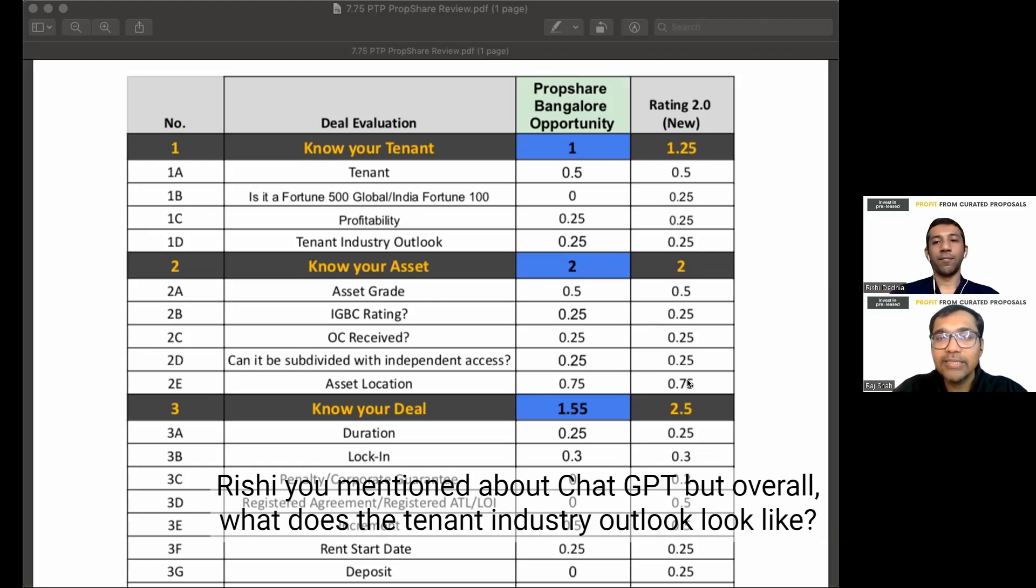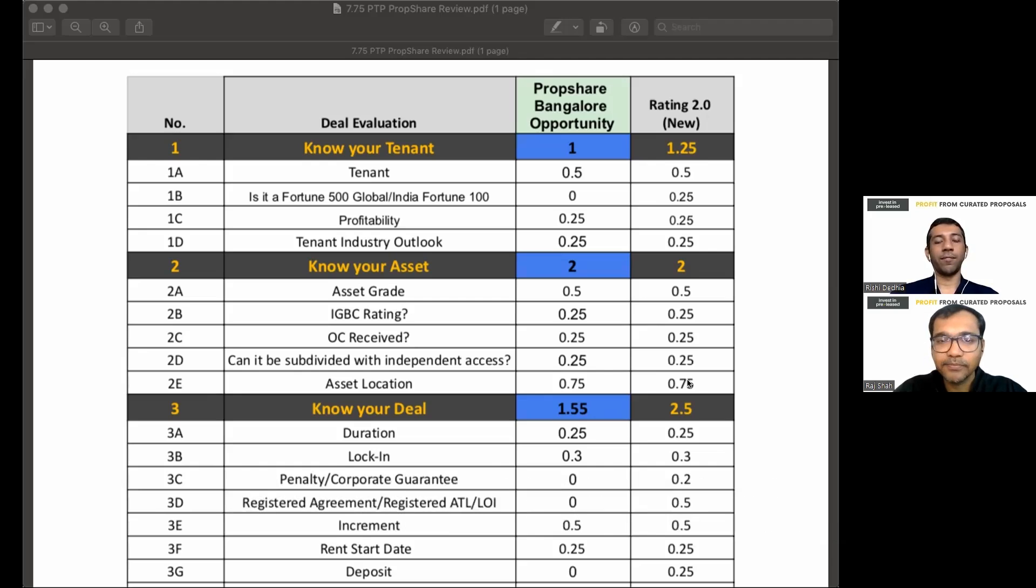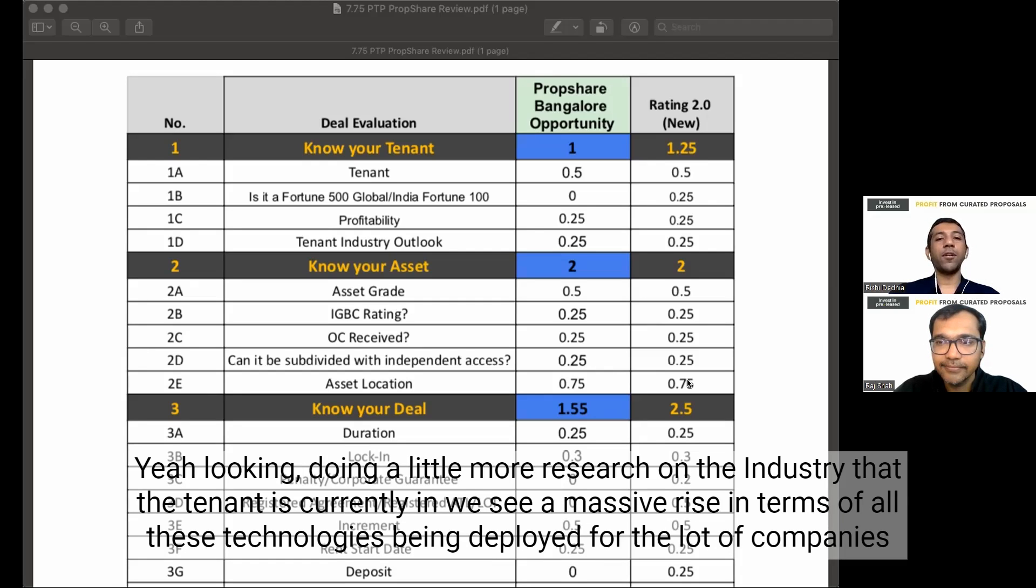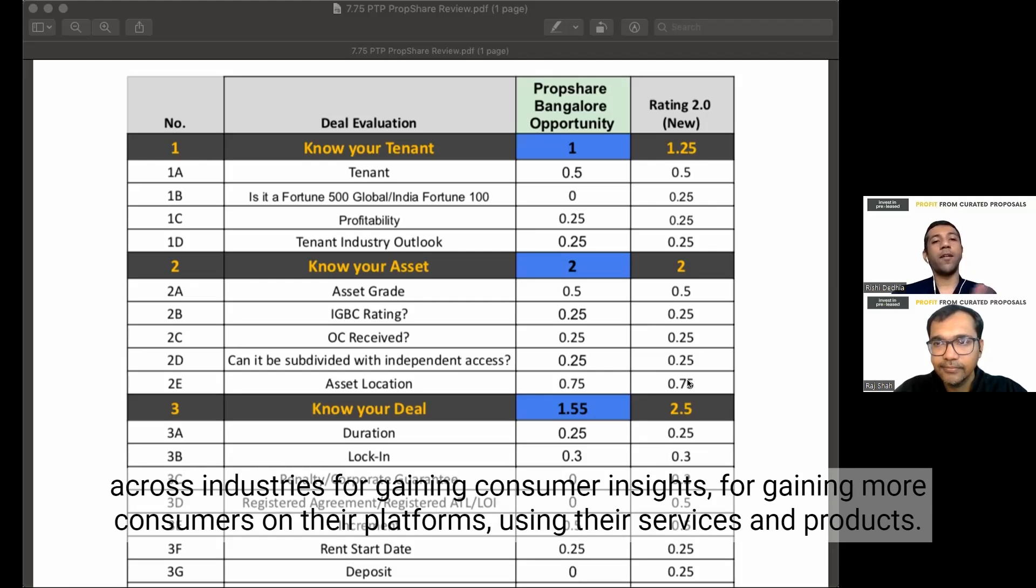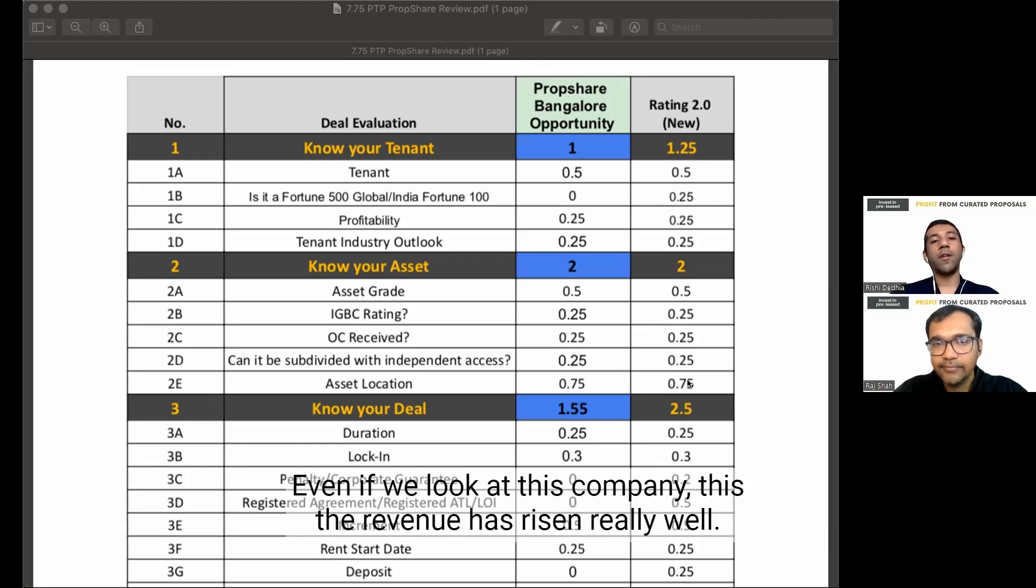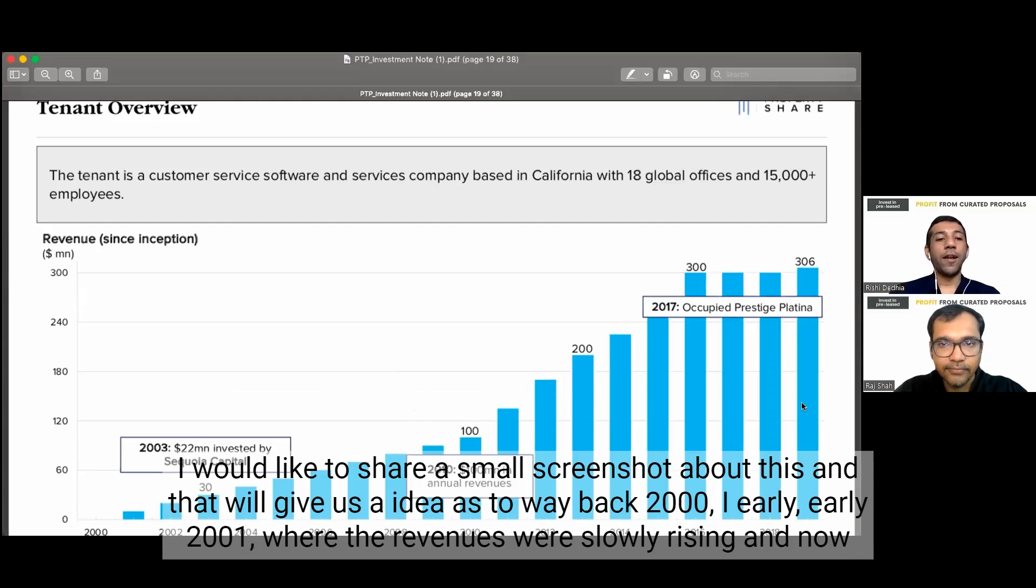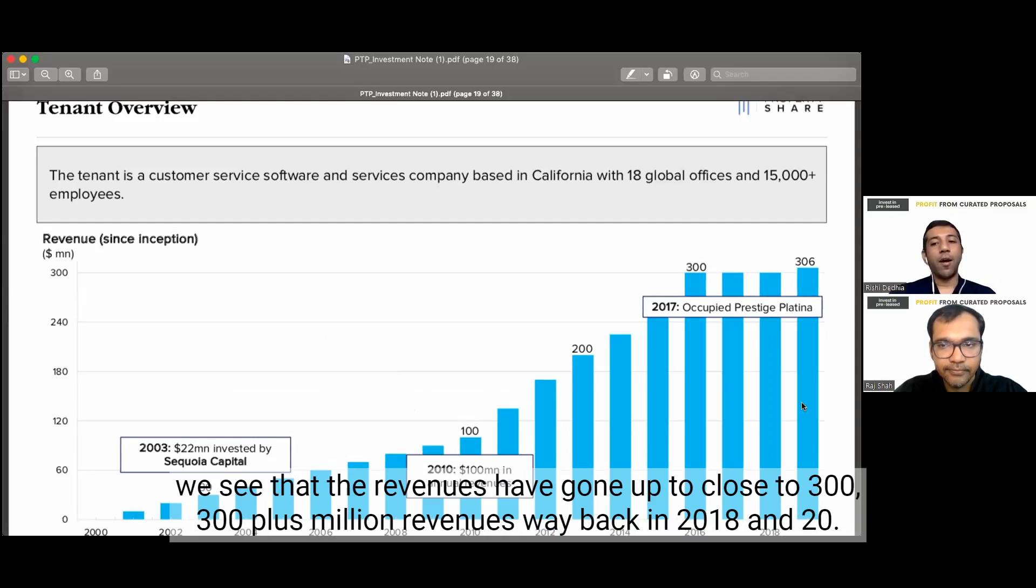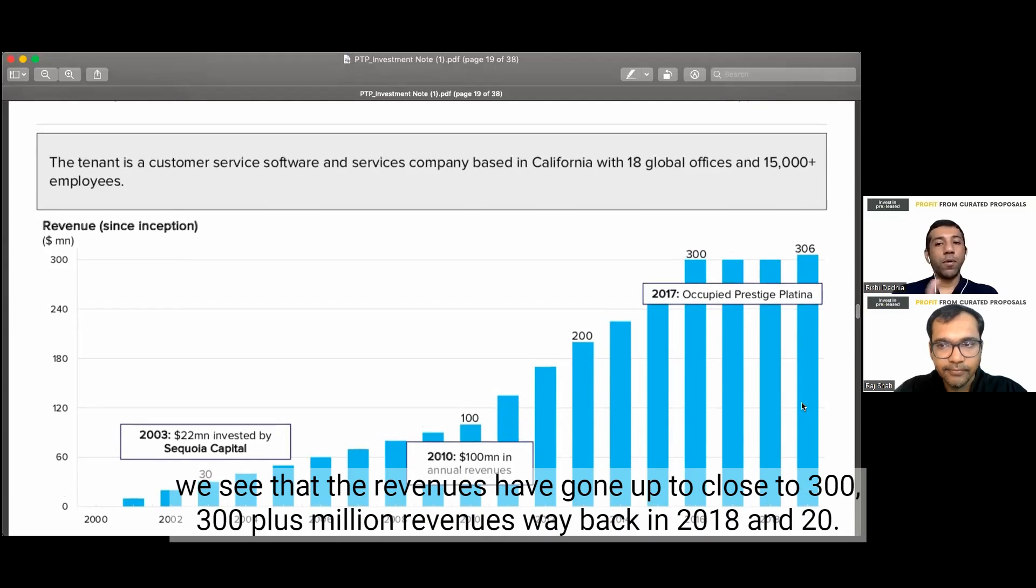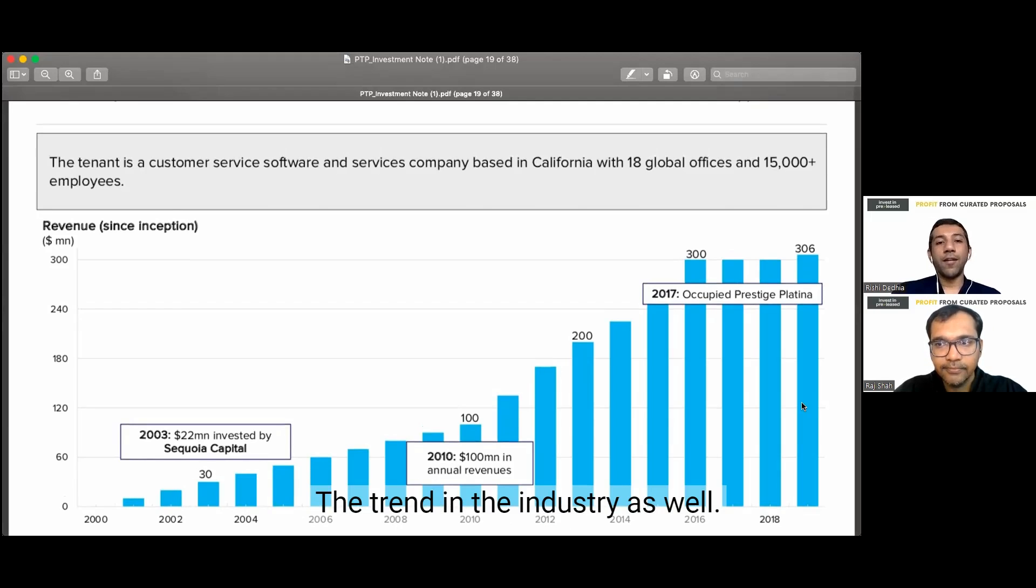You mentioned about chat GPT. But overall, what does the tenant industry outlook look like? Yeah, looking, we're doing a little more research. We see a massive rise in terms of all these technologies being deployed for a lot of companies across industries for gaining consumer insights, for gaining more consumers on their platforms, using their services and products. Even if we look at this company, the revenue has risen really well.